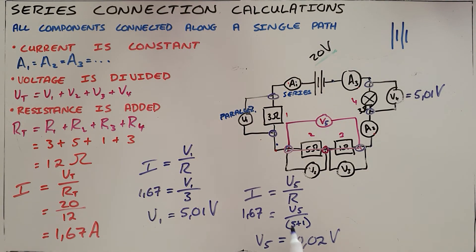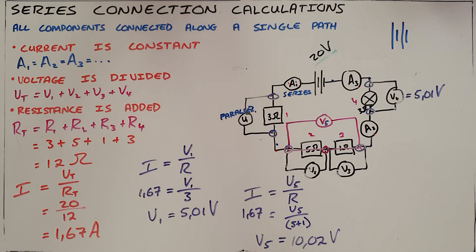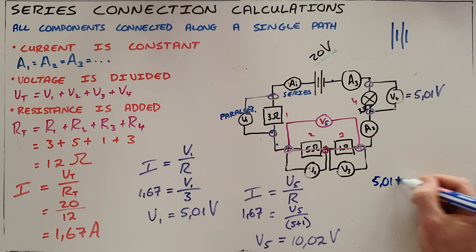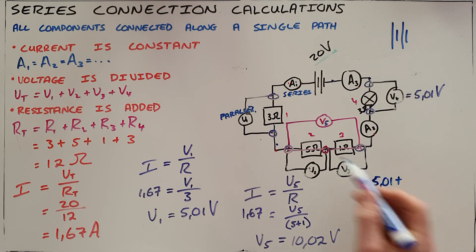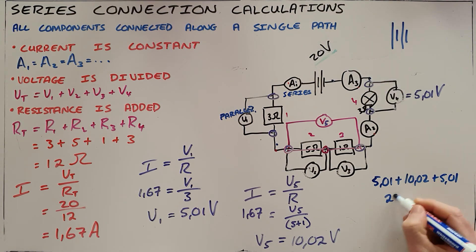What we can now also do is we can see that the second rule for series connections also applies because we can now see that our total voltage provided is 20 volts and the total voltage used is the sum of V1, which we worked out as 5.01 volts, V2 and 3, which we can combine to call V5, as 10.02, and R4 or V4 as 5.01. And we see that gets us to a value of 20.04 volts.